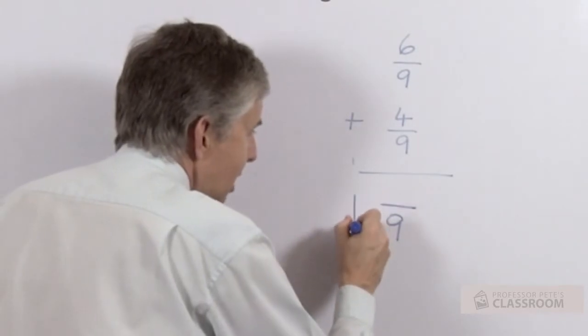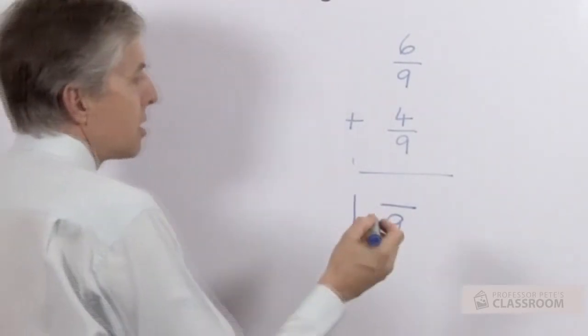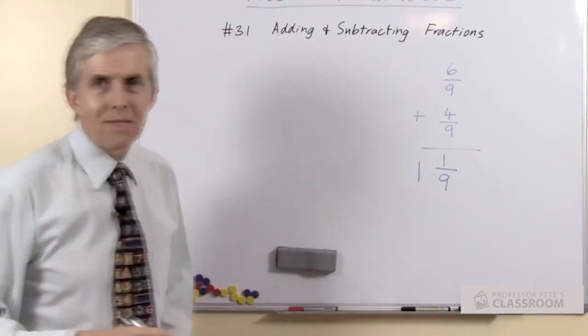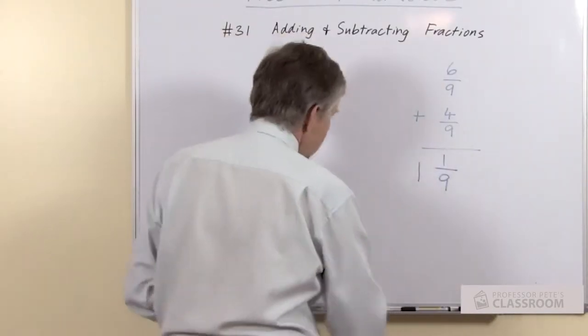So we can put if you like a one in the wholes place, so we can write the one down here straight away, and of course there's going to be one ninth left over. So that's an option.